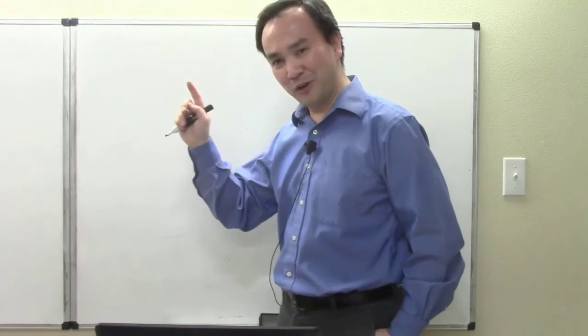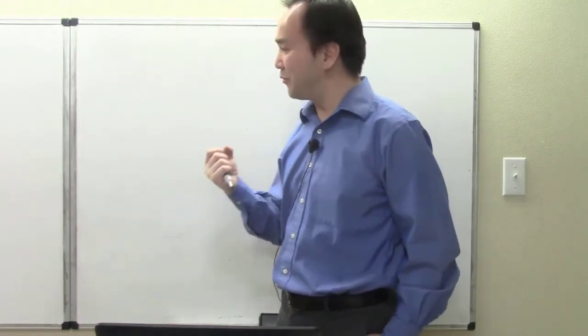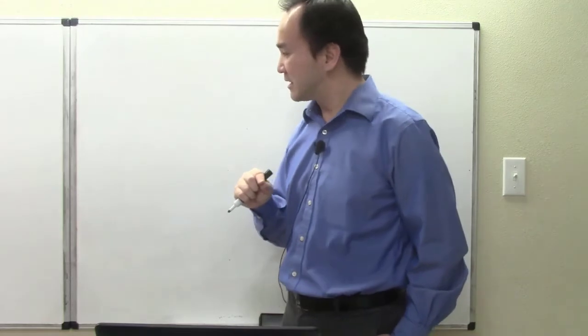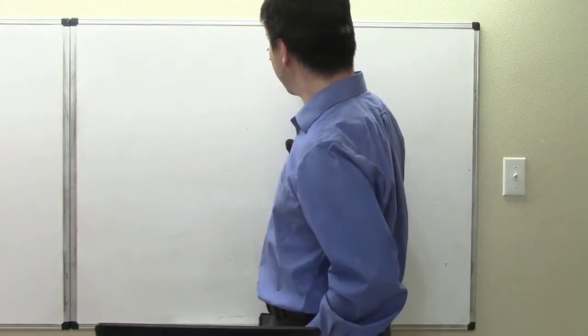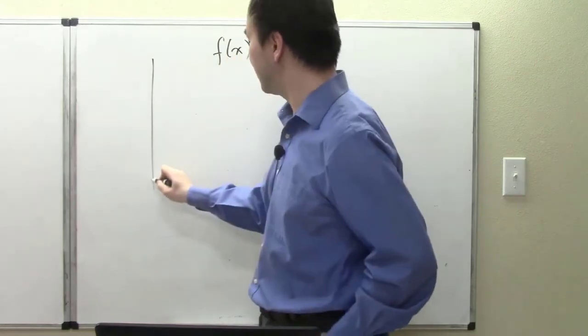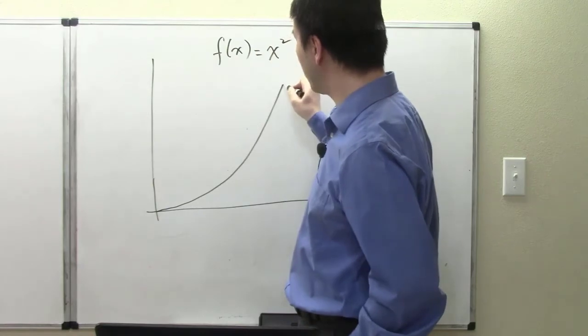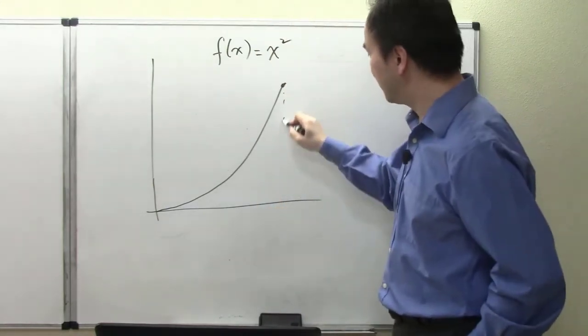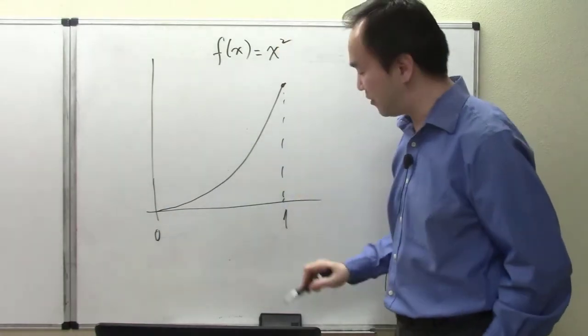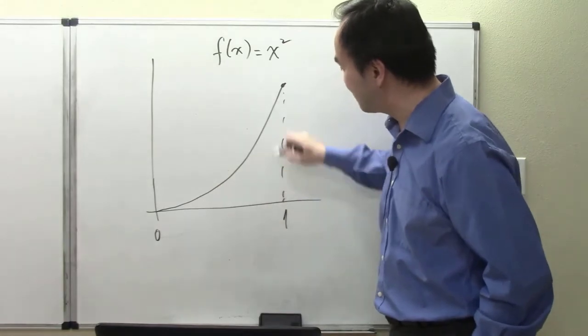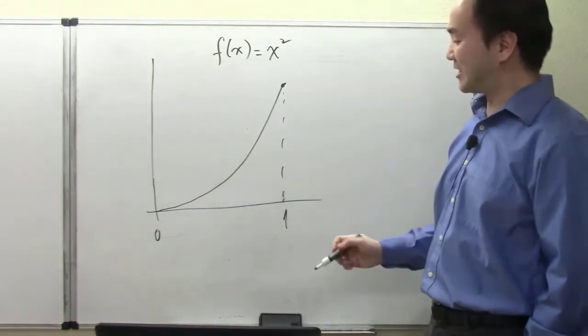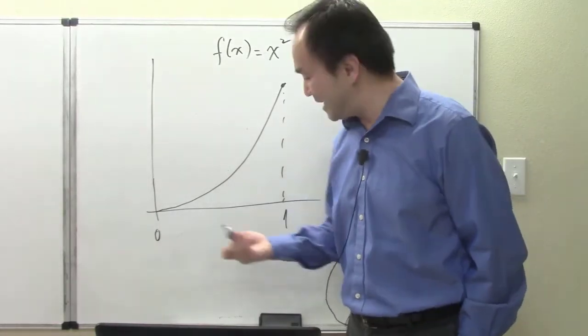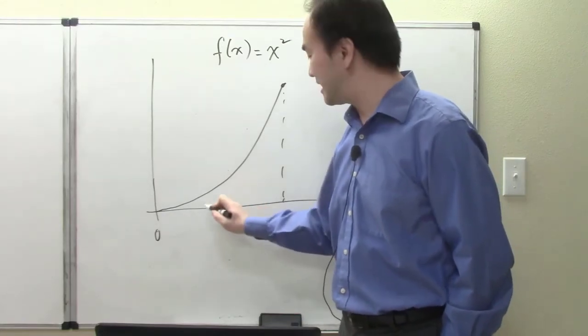Before we fully understand what a definite integral is, let me recap a couple points from our earlier talks about the Riemann sum. I brought up this picture where our function was x-squared, and I only need the portion on the interval from 0 to 1. The question was to find the shaded area completely inside of this bent graph.